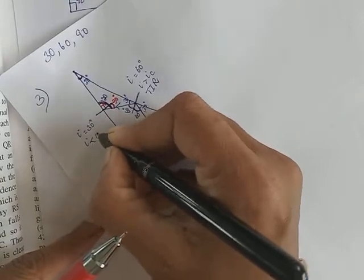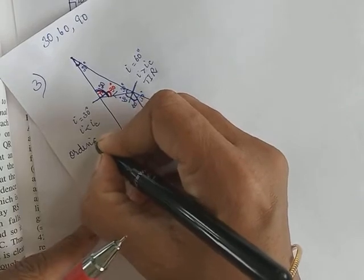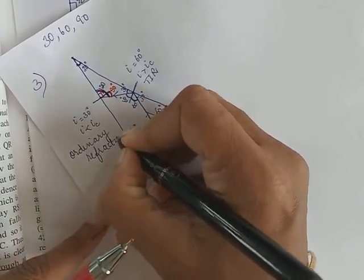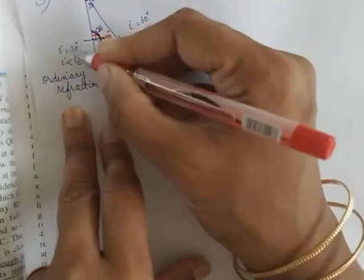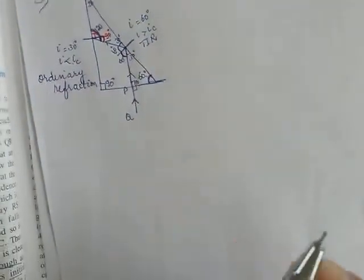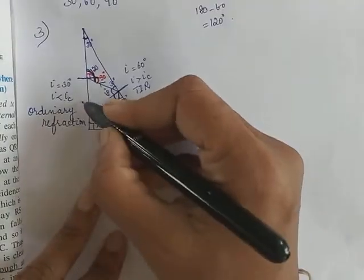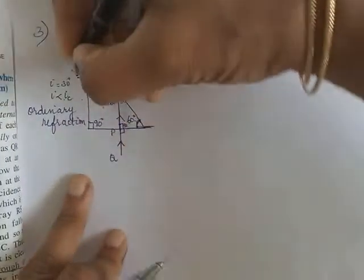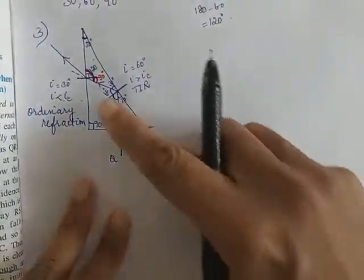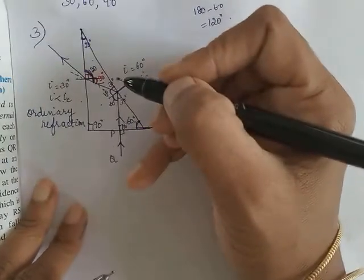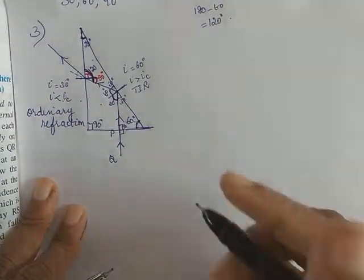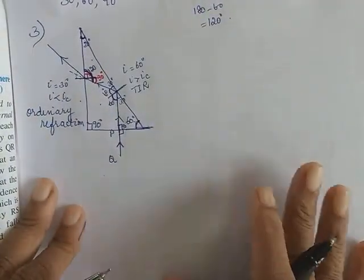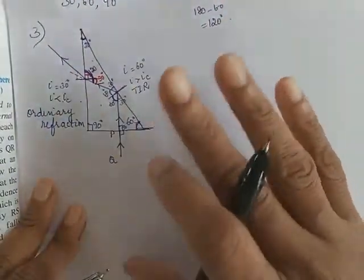30° is less than the critical angle, so ordinary refraction takes place here — no total internal reflection. The ray is going from glass (denser) to air (rarer), so it bends away from the normal. We can only show this bending roughly; the exact angle of refraction cannot be determined precisely.